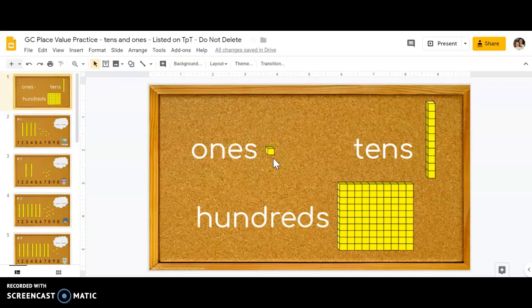Ones is called a single, tens is called a long, and hundreds is called a flat.